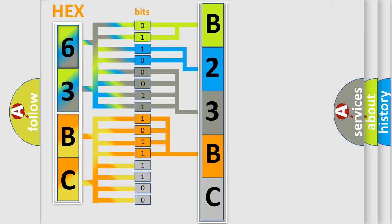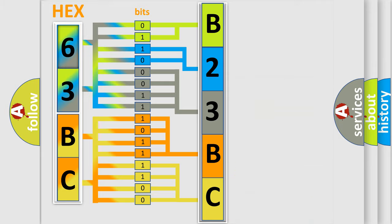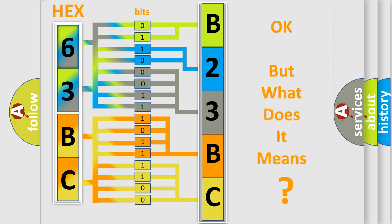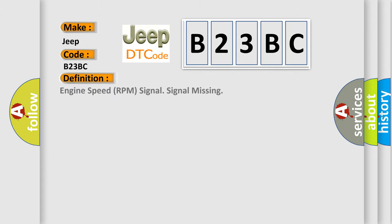A single byte conceals 256 possible combinations. We now know in what way the diagnostic tool translates the received information into a more comprehensible format. The number itself does not make sense to us if we cannot assign information about what it actually expresses. So, what does the diagnostic trouble code B23BC interpret specifically for car manufacturers?